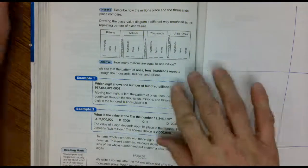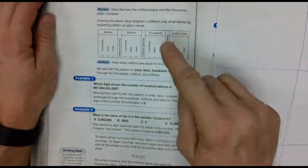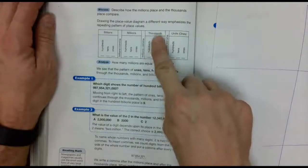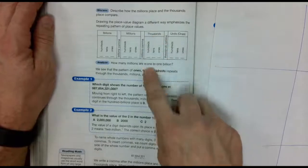Now, when we read these out, we still read them out like we normally do. Ones, tens, hundreds. Ones, tens, hundreds, thousands. One thousand, ten thousand, hundred thousand.